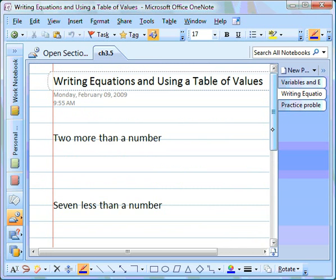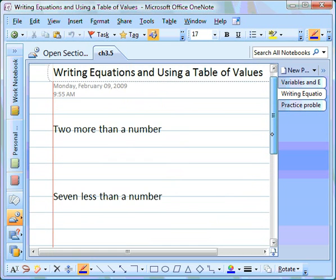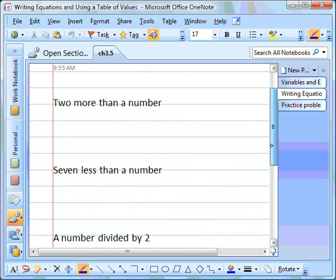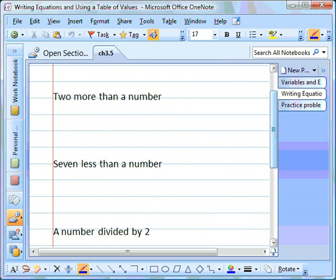We're going to look at some examples of the kinds of things you're going to need to know how to do. First of all, we're going to write equations and use tables of values. If they give you a word problem, such as two more than a number, you need to know how to put that into a variable expression. Two more, the word more tells us to add, then a number. A number needs to be represented by a variable. You can pick any letter you want, but I'm going to pick the letter n.